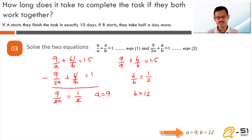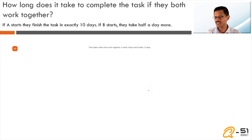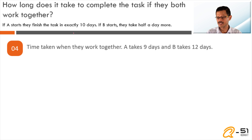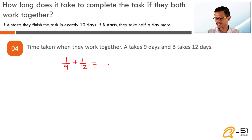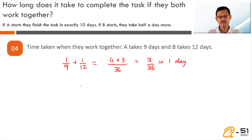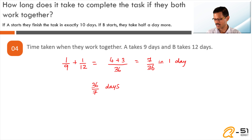Step four: the question asks how long they take working together. A takes 9 days, B takes 12 days. In a day A completes 1/9 and B completes 1/12. Together they complete 1/9 + 1/12 = 4/36 + 3/36 = 7/36 of the task per day. The total time is the reciprocal: 36/7 days. The correct answer is D.